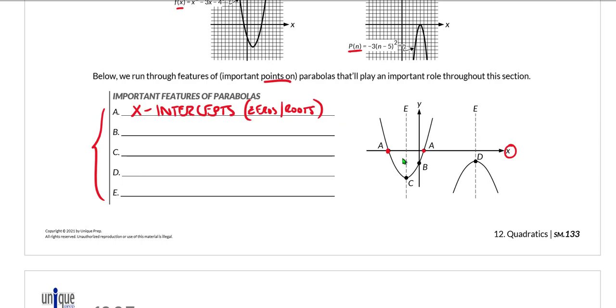And B, point B, of course, is where the parabola hits the y-axis. So B is known as the y-intercept.